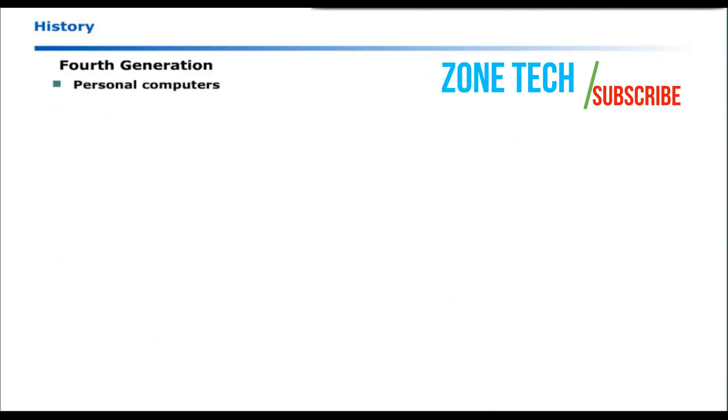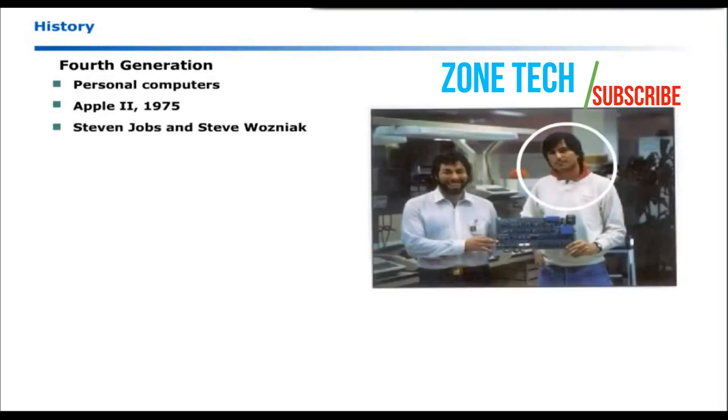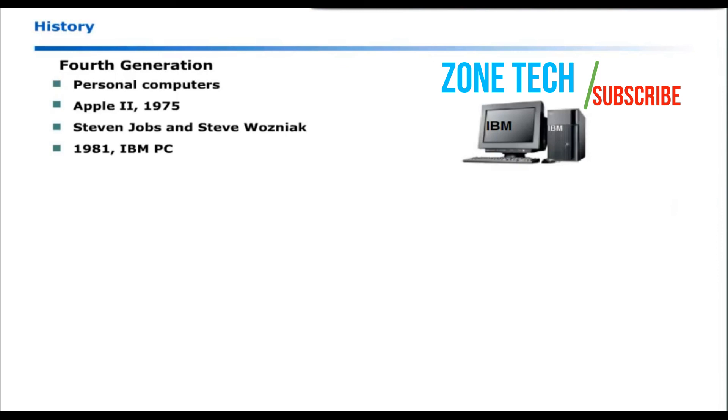Personal computers were not available. Apple II personal computer was introduced in 1975. This was a prominent venture by Steven Jobs and Steve Wozniak. In 1981, IBM introduced IBM personal computer and many personal computers were sold by the end of 1982. At that time, many other companies started manufacturing of IBM PC compatibles.